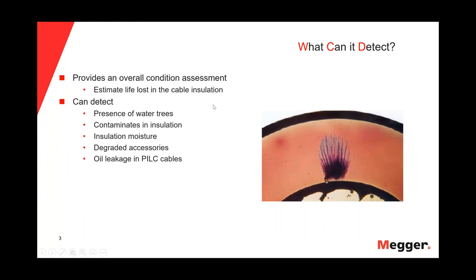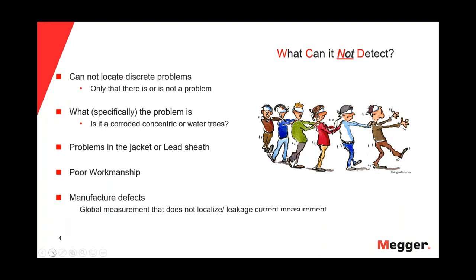What can Tan Delta detect? It provides an overall condition assessment, estimates life lost in the cable insulation, and can detect the presence of water trees, contaminants in insulation, insulation moisture, degraded accessories, and oil leakage in PILC cables. What it cannot detect: it cannot locate discrete problems — only that there is or is not a problem. It is a global assessment that does not localize. It cannot determine specifically what the problem is — whether a corroded concentric, a water tree, or a dirty termination. It also cannot detect problems in the jacket or lead sheath, or isolate poor workmanship or manufactured defects. Essentially, this is fundamentally a leakage current measurement.